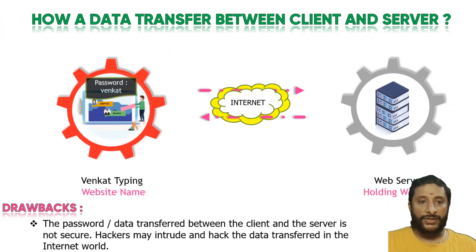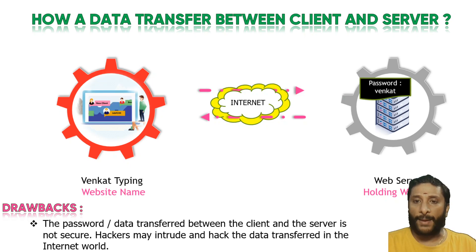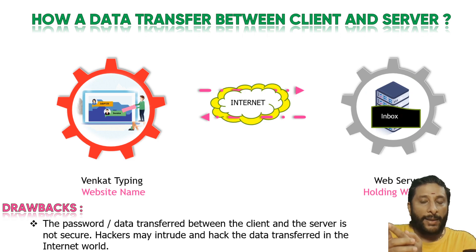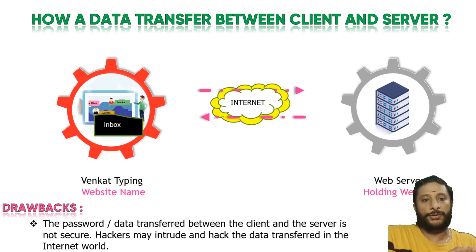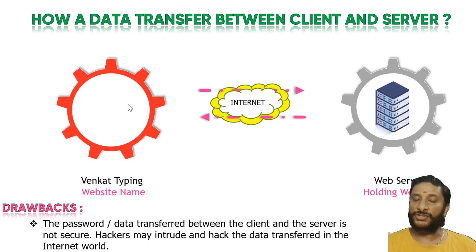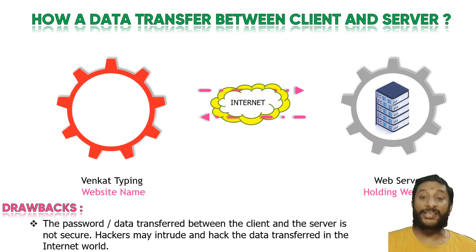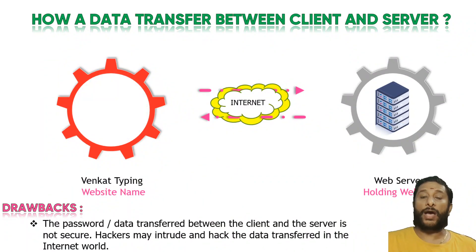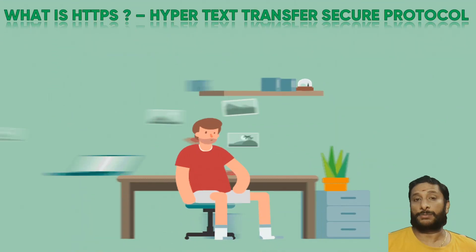The major problem with HTTP is security. When you type a password and send it to the destination, or when the inbox data is returned back, hackers may attack and intercept that data. That is a major drawback of HTTP. To solve this, we need an intelligent system — and that's where HTTPS comes into the picture.